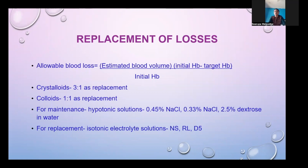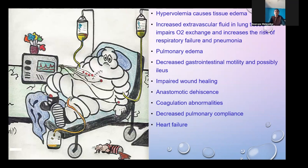The liberal strategy may cause hypervolemia due to excessive volume administration. Even unnecessary deep anesthesia with hypotension can lead to excessive fluid administration. This hypervolemia results in reduced tissue perfusion due to tissue edema and clinically significant postoperative fluid retention, causing increased morbidity, increased ICU length of stay, and increased mortality.